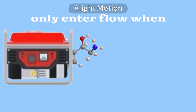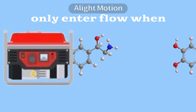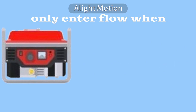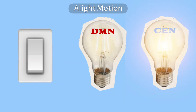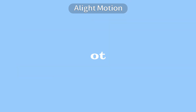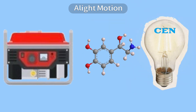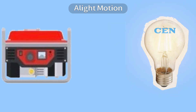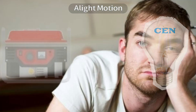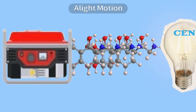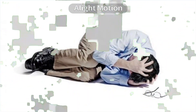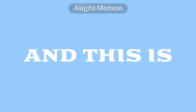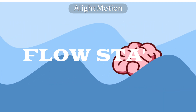You can only enter flow when the generator releases the electricity steadily. When the switch is flipped, the light will stay on. Otherwise, leaking electricity will make the bulb flicker — the same as you being bored. Too much energy will make the light blow out — the same as you being panicked or stressed. That is flow state.